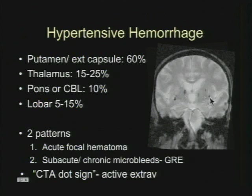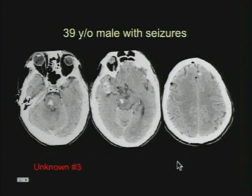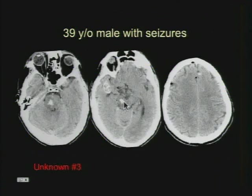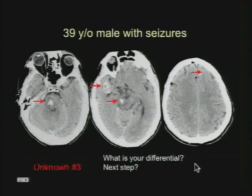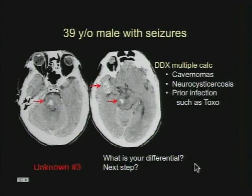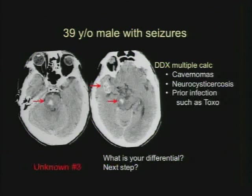Here's this patient's gradient sequence — multiple areas of microbleeds and susceptibility centered in the basal ganglia. The next unknown case is a 39-year-old male with seizures. The differential on CT for multiple calcified lesions — you can see lesions in the right cerebral peduncle, right temporal lobe, and left frontal lobe. The differential for multiple calcifications includes multiple cavernomas, neurocysticercosis (the calcification is usually smaller, more round, punctate — not this large irregular calcification), and prior infection such as treated TB or treated toxoplasmosis.